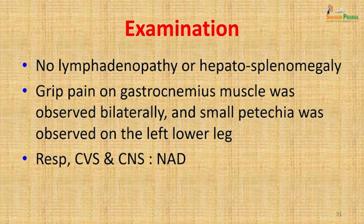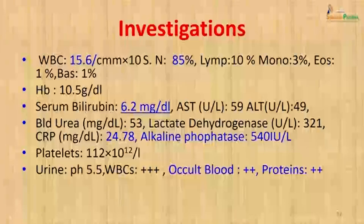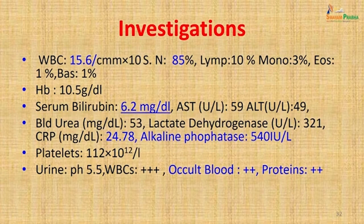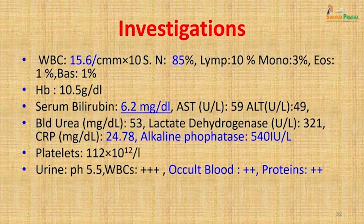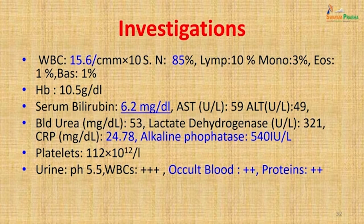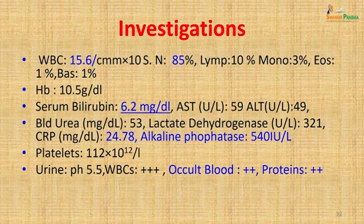The respiratory system, CVS, and CNS showed no abnormality. On investigation, leukocytosis was seen with an increase in polymorphs — a polymorphonuclear leukocytosis. Hemoglobin was slightly low, so the patient was anemic. Serum bilirubin was raised at 6.2 mg/dL. Other liver function parameters were not markedly raised except alkaline phosphatase which was remarkably elevated at 540 IU/L. Blood urea was also slightly raised, CRP was raised, platelets were normal. Urine parameters were disturbed — WBCs, occult blood, and proteins were present in urine, indicating renal involvement along with jaundice.